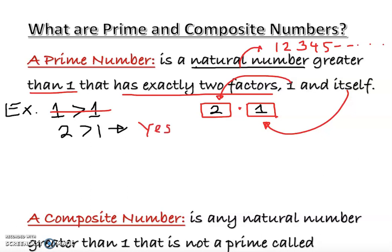How about three? Is three greater than one? Yes. We check: three times one gives us three. That satisfies our criteria, so therefore three is a prime number.